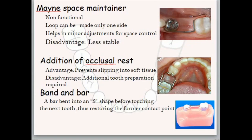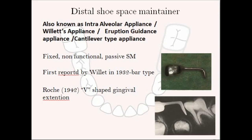Another modification is a non-functional space maintainer where a single side loop is used, helpful for minor adjustments for space control. A disadvantage is that it is less stable. When an additional occlusal rest is present, the advantage is it prevents slipping into soft tissue, but the disadvantage is that tooth preparation is needed. There is also a banded bar — where a bar is bent into an S-shape, touching the next tooth and disrupting the former contact point in those two regions.